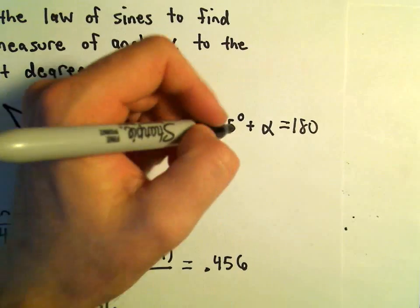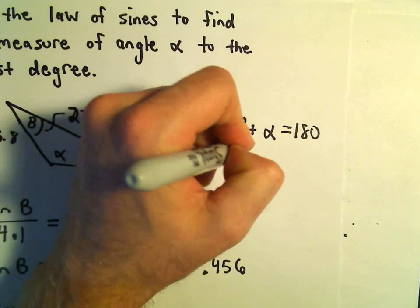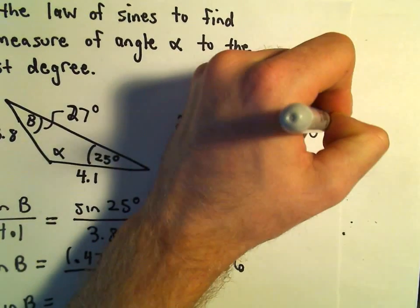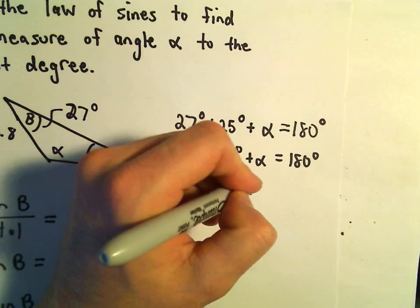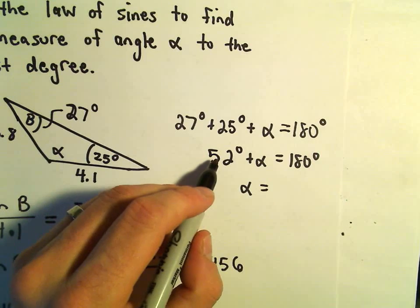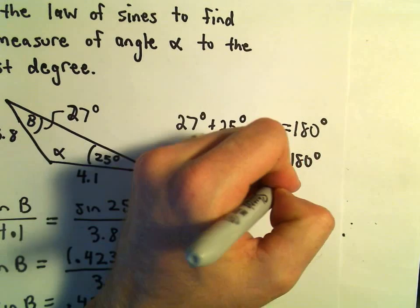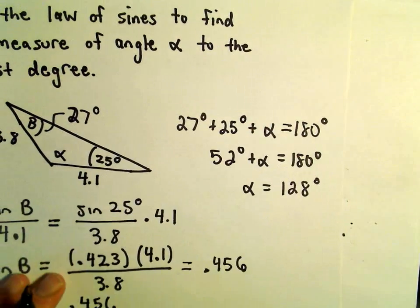Well, 27 and 25, that's going to give us 52 degrees plus alpha equals 180 degrees. We can simply subtract the 52 from both sides. That will leave us with 128 degrees.